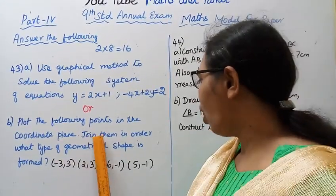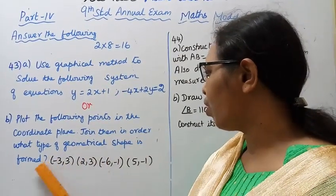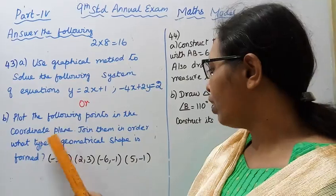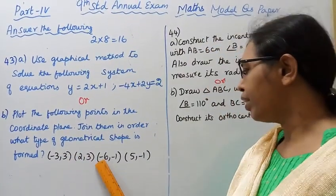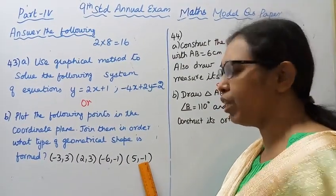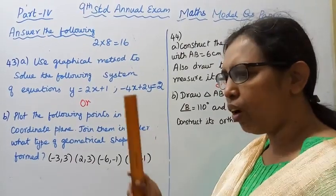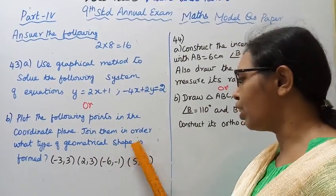Or, b: Plot the following points in the coordinate plane. Join them in order. What type of geometrical shape is formed? Plot the following points in the coordinate plane: minus 3 comma 3, 2 comma 3, minus 6 comma minus 1, 5 comma minus 1.